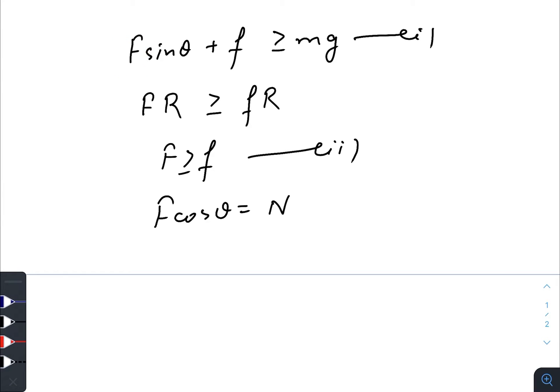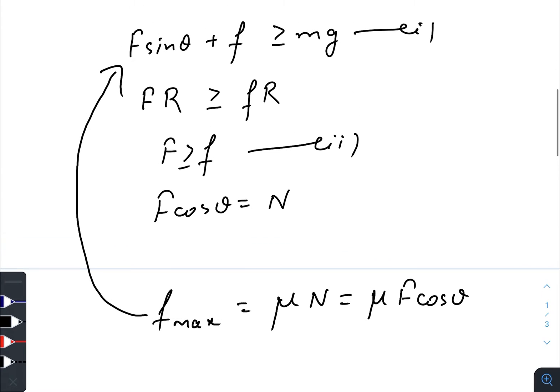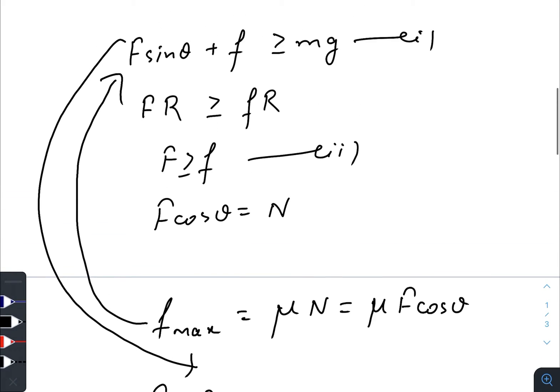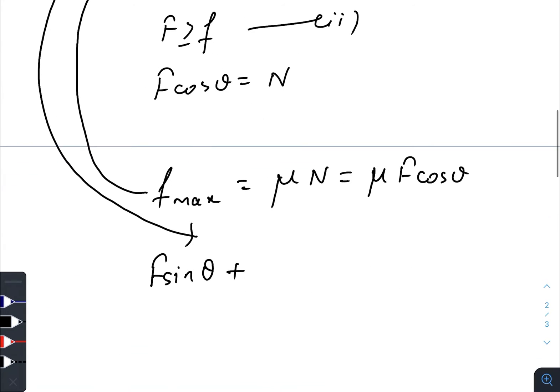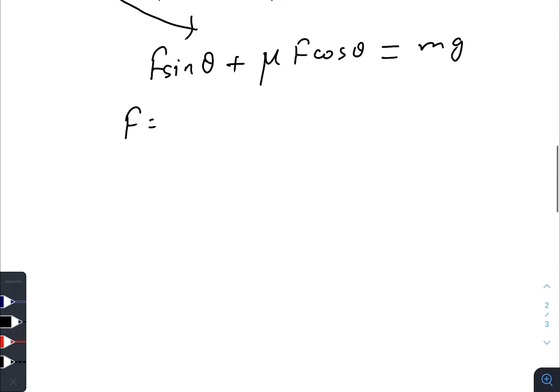So for minimum value of capital F, we need to take the maximum value of the friction. So f_max will be μ times N, that is μ times F cos θ. We will just plug this value of f in the first equation and we will have F sin θ plus μ times F cos θ greater than or equal to mg. Let us take the limiting value and just put equal to here.